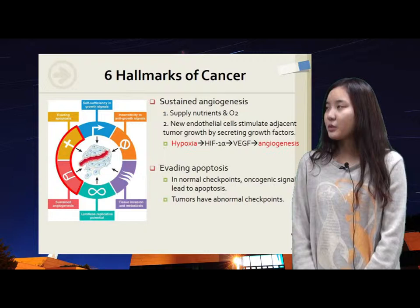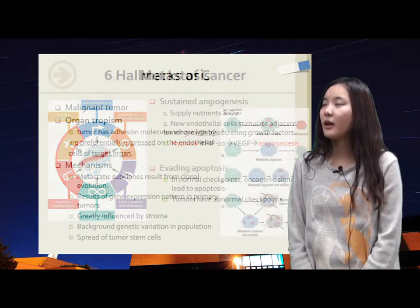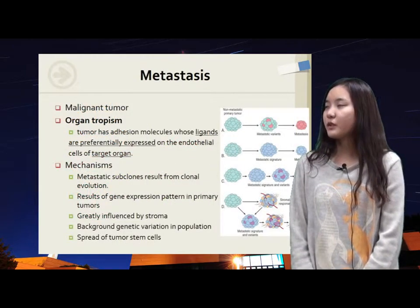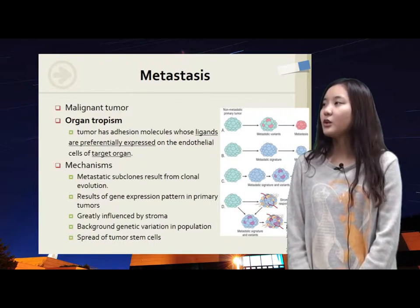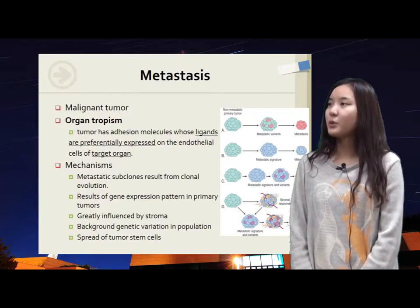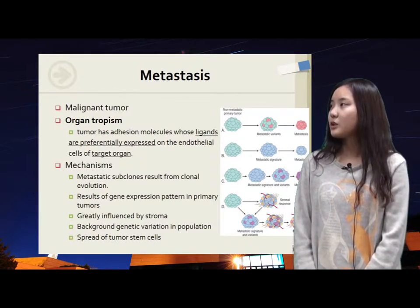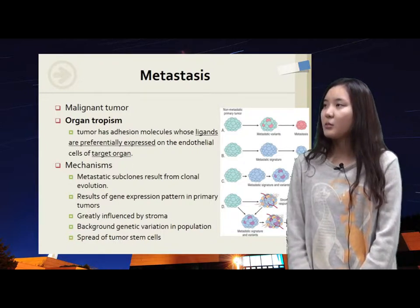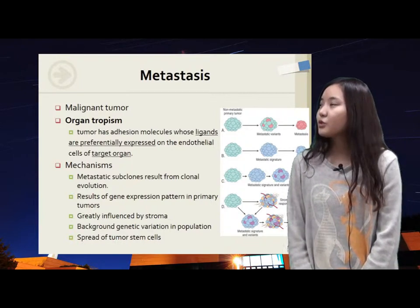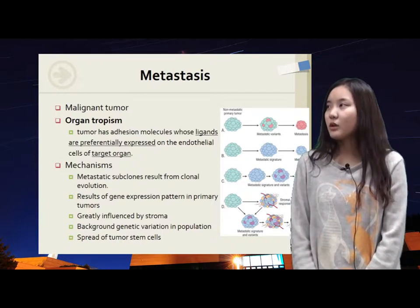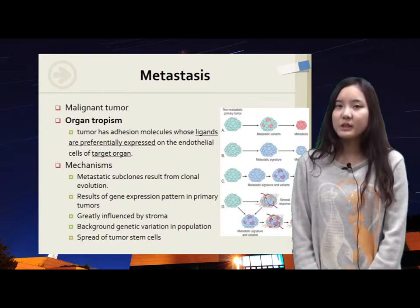Tumor's cell cycle checkpoint is not normal, so it cannot lead cells to apoptosis although there are oncogenic signals. Metastasis is one notable feature of cancer. Organ tropism means the property that tumor has adhesion molecules whose ligands are preferentially expressed on the endothelial cells of target organs. The usual ways metastasis occurs include: metastatic subclones from clonal evolution, gene expression patterns in primary tumor, influence of stroma, background genetic variation in population, and spread of tumor stem cells.